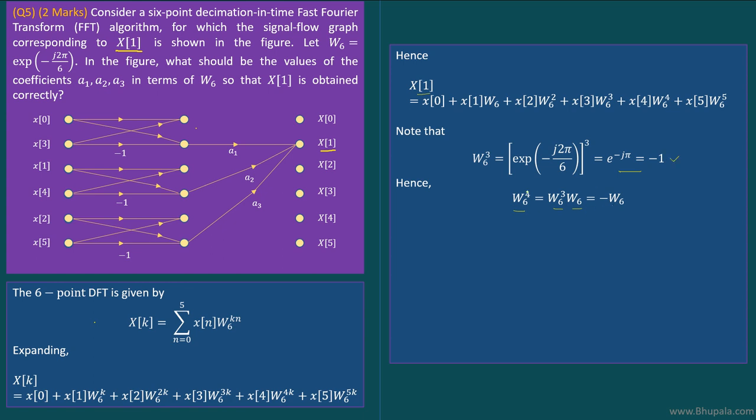In similar fashion, W6^5 can be written as W6^3 × W6^2. Again, W6^3 can be replaced with -1, and hence this would be equal to -W6^2.